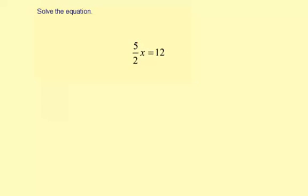Solve the equation 5 halves times x equals 12. So to get this x by itself, we need to multiply by the multiplicative inverse, or the reciprocal.